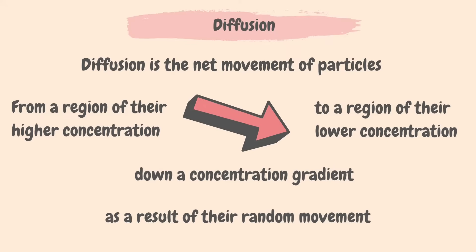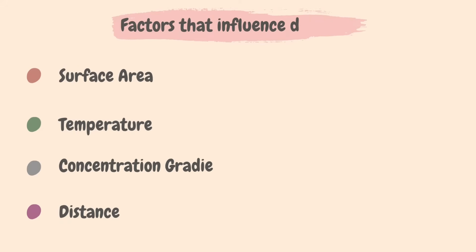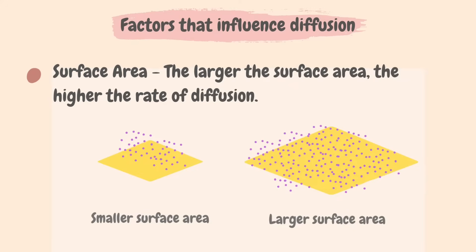Now let's take a look at the factors that influence diffusion. They are surface area, temperature, concentration gradient, and distance. The first factor is surface area. The larger the surface area, the higher the rate of diffusion, because more molecules at a given time will be diffusing.